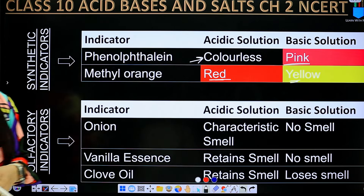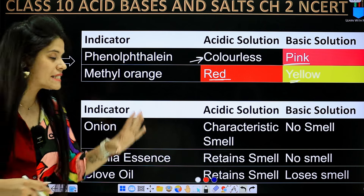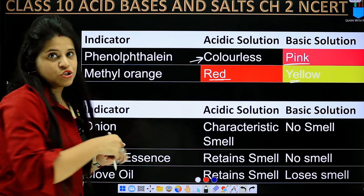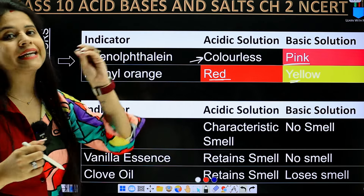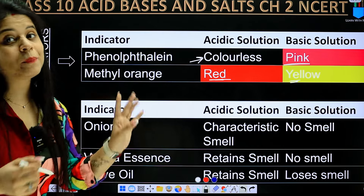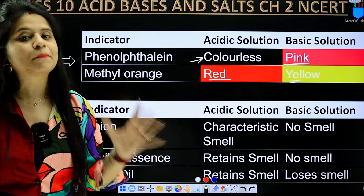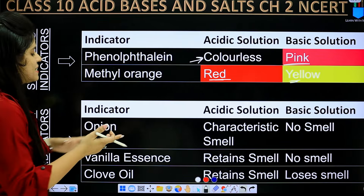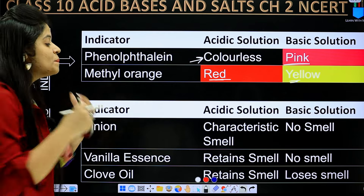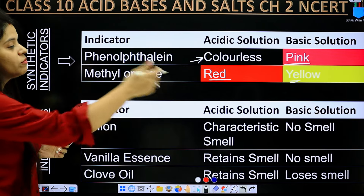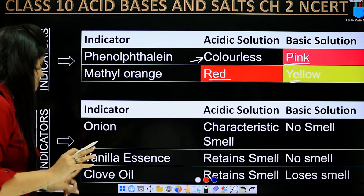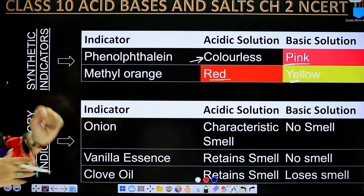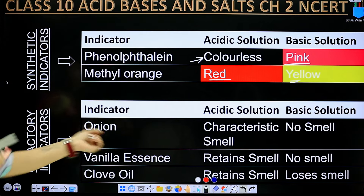When we talk about olfactory indicators, it works with smell. Like onion: if you add it in an acidic solution, the characteristic smell is retained; if you add it to a basic solution, the smell disappears — no onion smell. For vanilla essence: in acid the smell is retained, and in base there is no smell. Similarly for clove oil: in acidic solution the smell is retained, and in a basic solution it loses its smell.